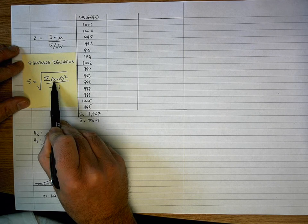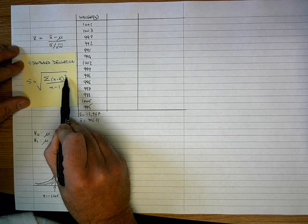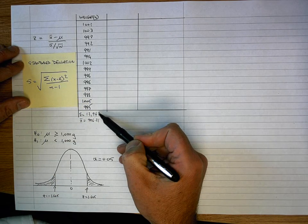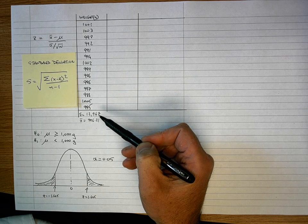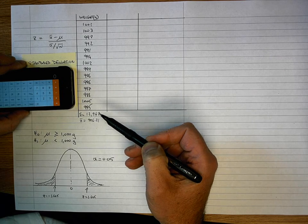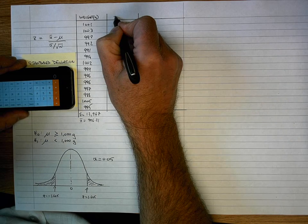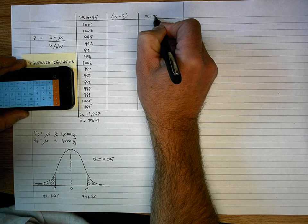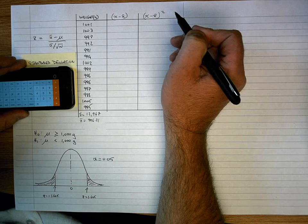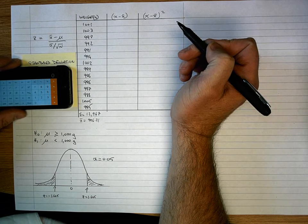So our steps here is we need to work out X minus X-bar and square that value for each of our values of X. So let's go ahead and do that for the first value. I'm going to put my column here, X minus X-bar, and in the column beside it, X minus X-bar squared. You could do these together, but I'm just separating them for illustration purposes.